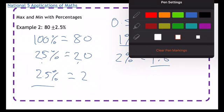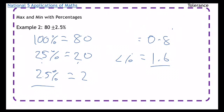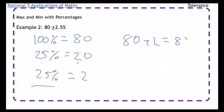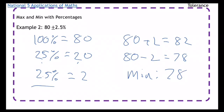So then once I've got 2.5, I'm just adding it on and taking it away. So 80 plus 2 is 82, 80 minus 2 is 78. So the minimum is 78 and the maximum is 82, and there's no units there.